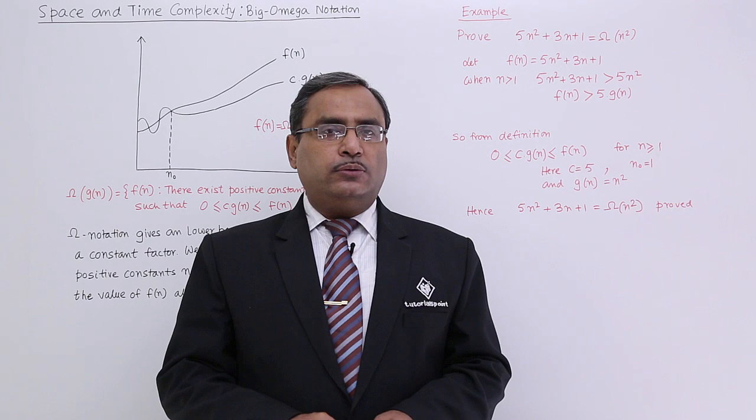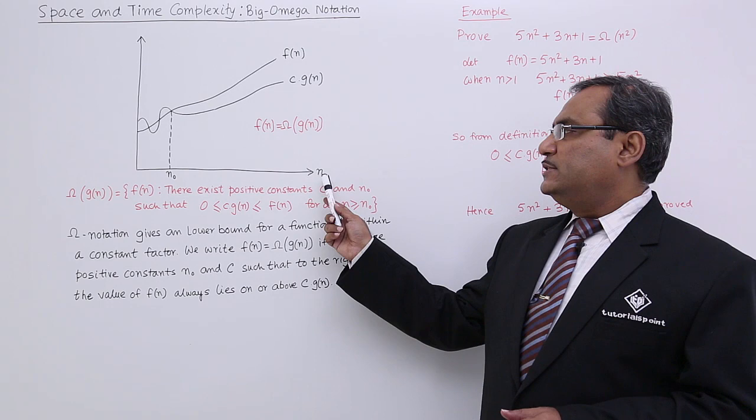Let us define the asymptotic notation big omega to calculate the lower bound. Look at this particular graph.